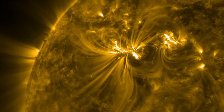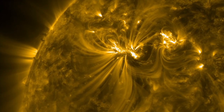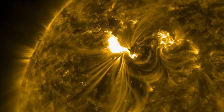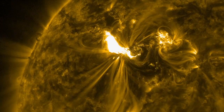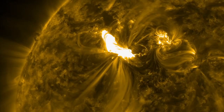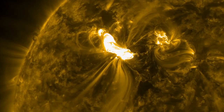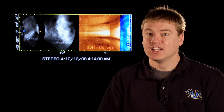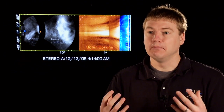A solar flare is a huge release of energy that converts the magnetic energy of the Sun into heat and light. It accelerates particles and can really heat up the plasma in a matter of minutes to over 60 million Kelvin.